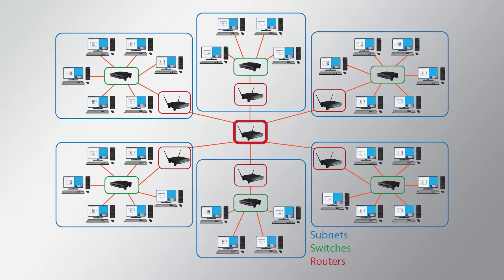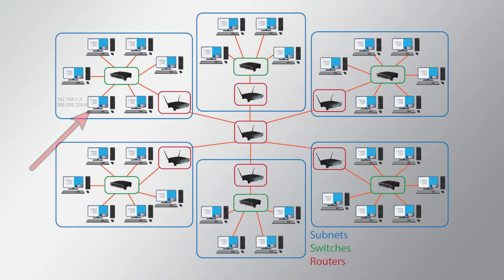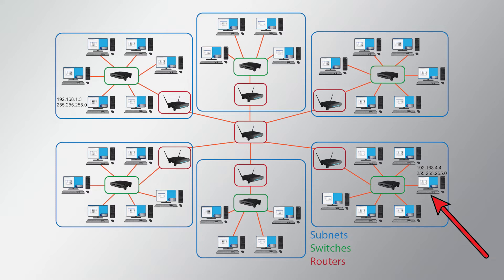The gateway devices are then attached to a central router. When a computer with the IP address 192.168.1.3 and a subnet mask of 255.255.255.0 needs to connect to a computer with an IP address of 192.168.4.4, since the destination network address is different than its own, the computer knows the destination host is outside the subnet. The computer sends the data message to the subnet's gateway device, which then sends it to the central router. The central router connects to the gateway device in the target subnet, which passes the data message to the subnet switch, and the connection to the target computer is completed.